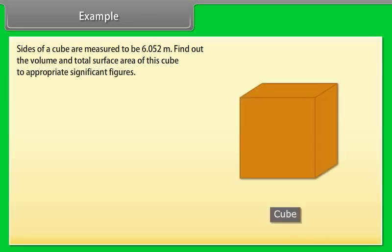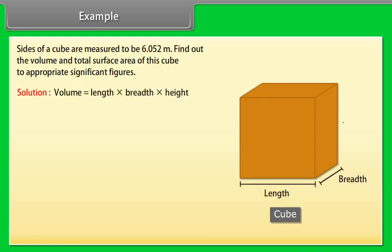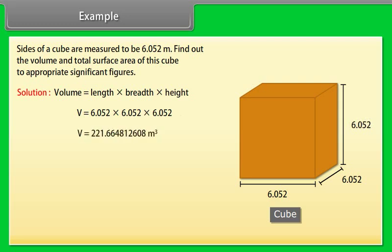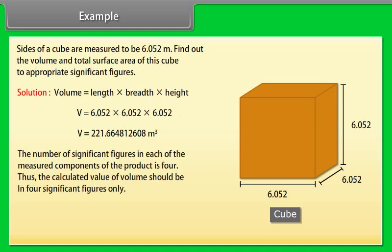Example: Let us take an example of significant figures. Sides of a cube are measured to be 6.052 meters. Find out the volume and total surface area of this cube to appropriate significant figures. Let us see the solution: Volume = length × breadth × height. After calculation, we get V = 221.665 m³. The number of significant figures in each of the measured components of the product is 4. Thus, the calculated value of volume should be in four significant figures only.